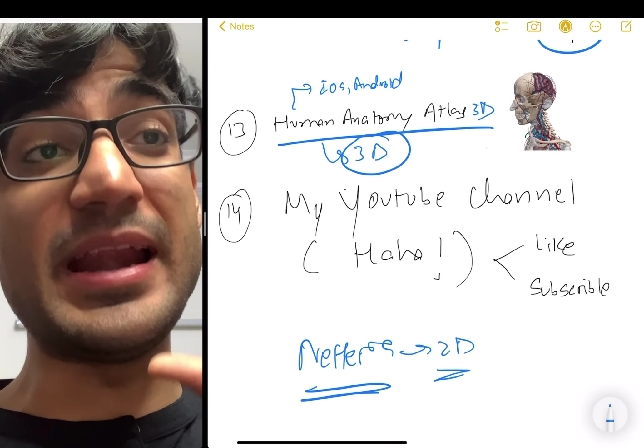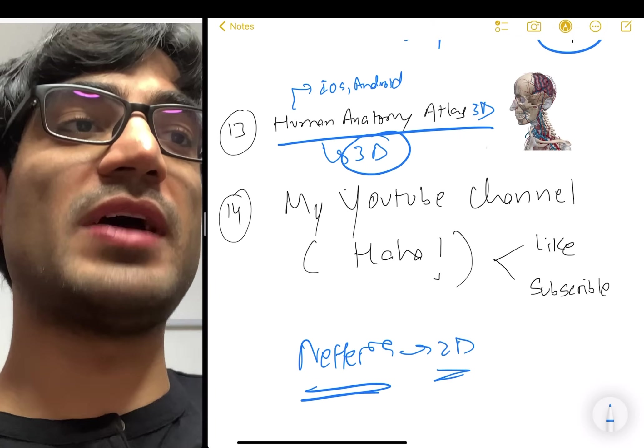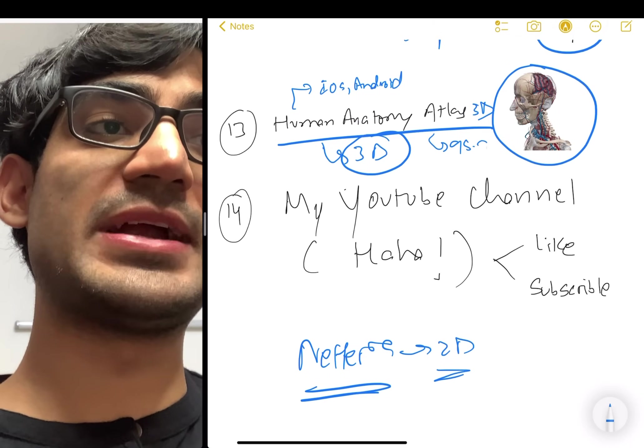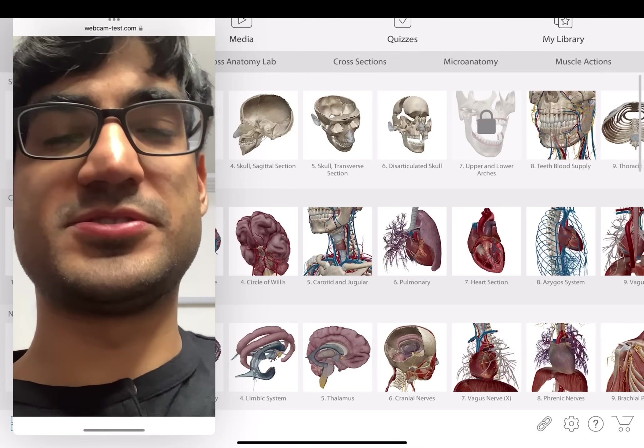So the best way to learn anatomy would be in 3D. And this is highly, highly accurate. It has an accuracy rate of I think 95 to 96%. And that's good enough. And I'll just show you a demo of how this works. So here you guys, now you can see the Human Anatomy Atlas app.